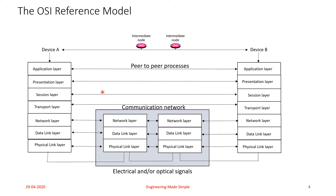As you can see in this diagram, this is Device A, which also has seven layers. Device B also has the same layers. And there are intermediate networks or intermediate nodes, which have only the first three layers of the OSI model. Whenever a stream of data or information is transmitted from Device A to Device B, the data packet moves as follows.